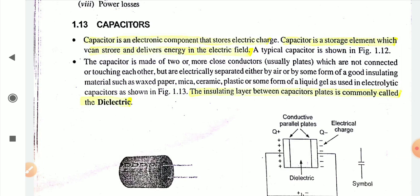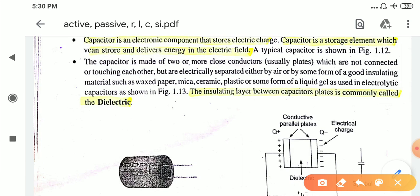So let's start with the capacitor. The capacitor is an electronic component. In the previous lecture we learned about the capacitor, inductor, and resistor — these three are passive components. The capacitor is an electronic component that stores electric charge, and it is also a passive component. The capacitor is a storage element which can store and deliver energy in the electric field.